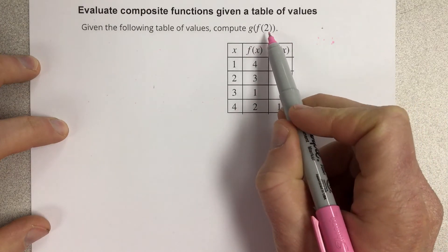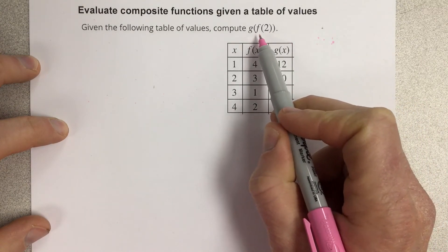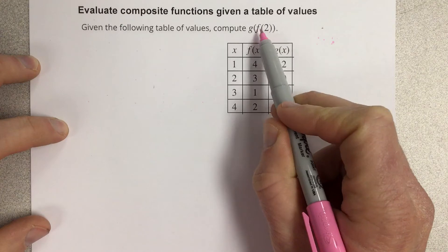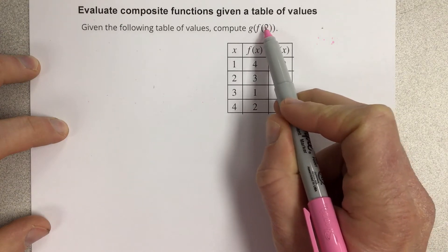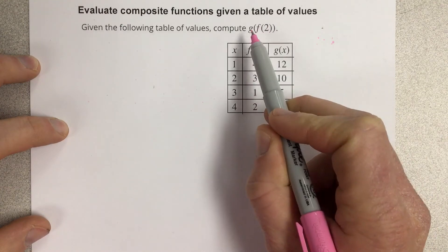So what they're asking you to do is to find the output for the f function with an input of 2, and then take that output and plug it into the g function.